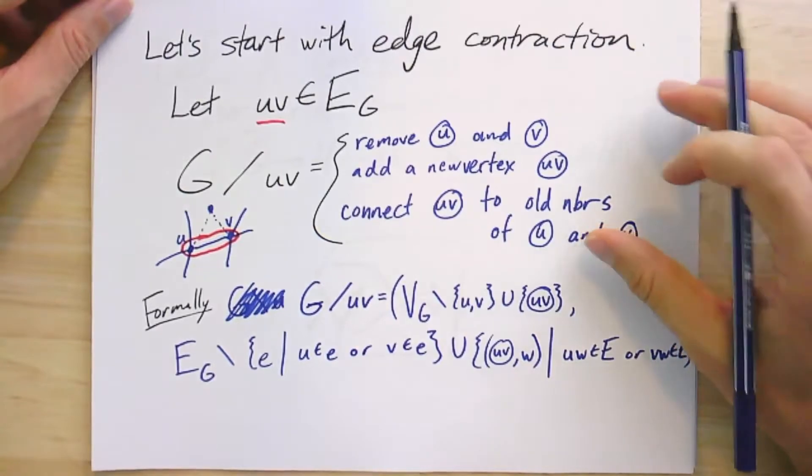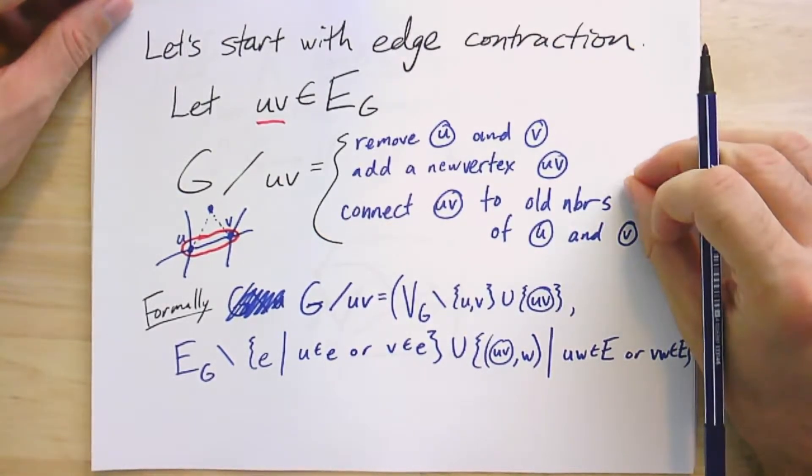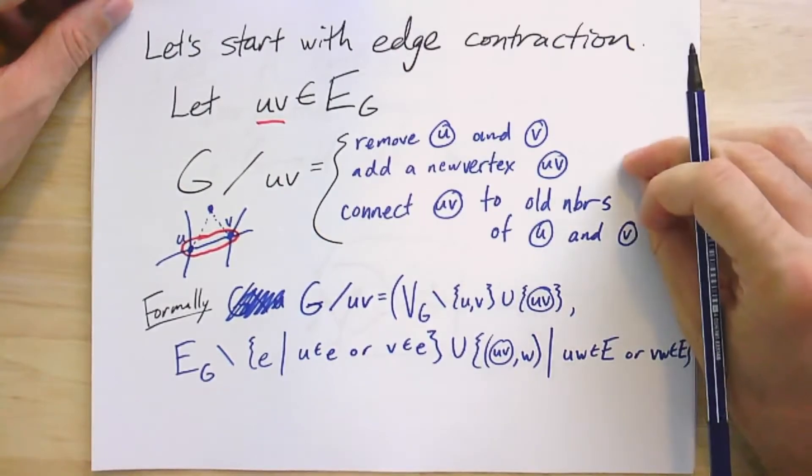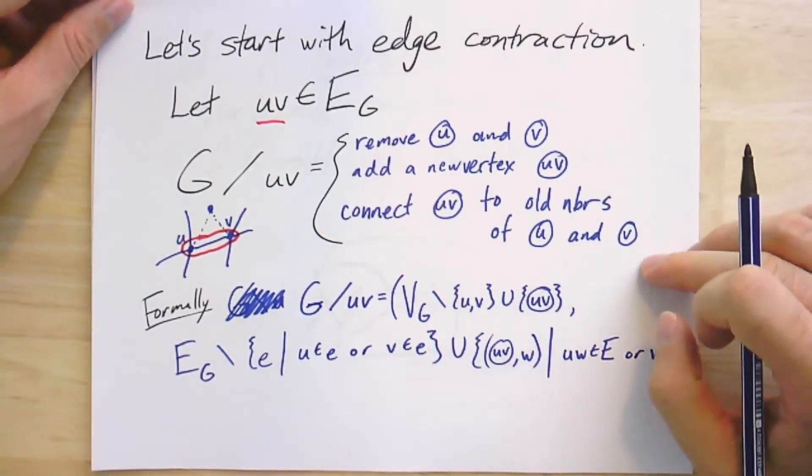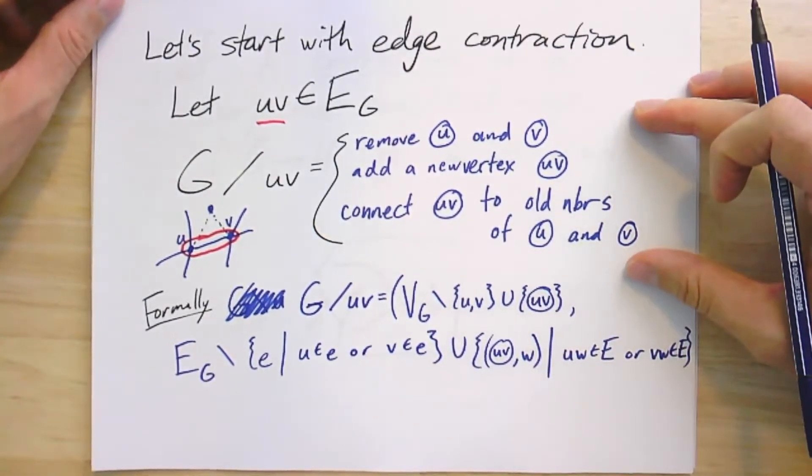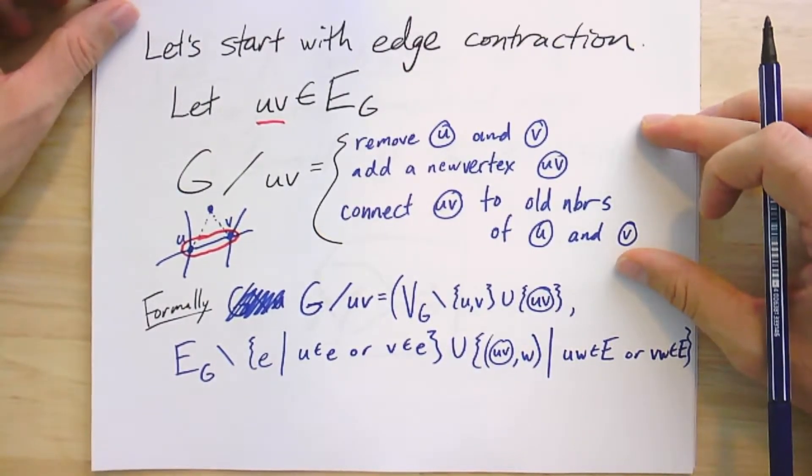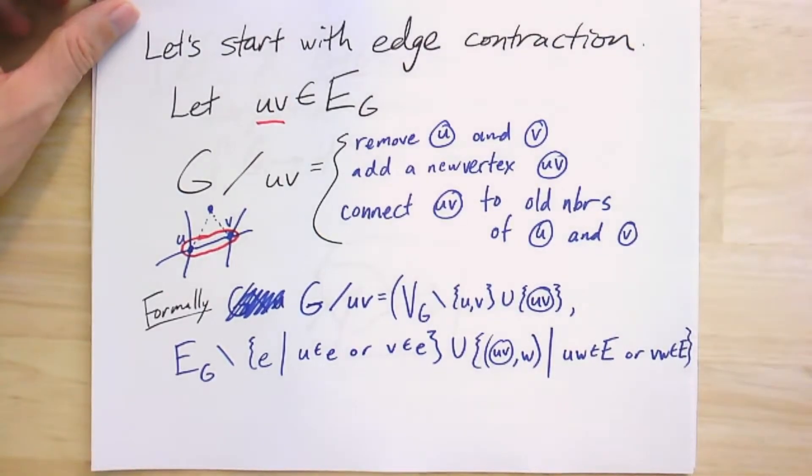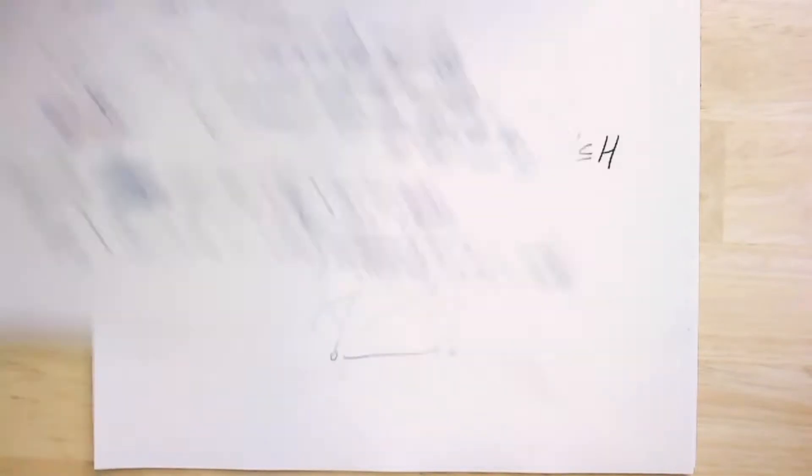It's just taking two vertices, removing them, replacing them with this mega vertex and connecting the new vertex to the old neighbors of U and V. So keep this in the back of your mind. Sometimes you'll bring it to the front of your mind. But also learn this other perspective that I'm going to show you now, which is in terms of simplicial maps.